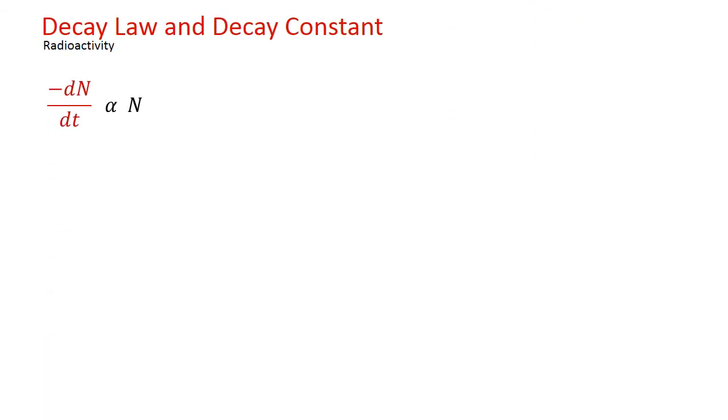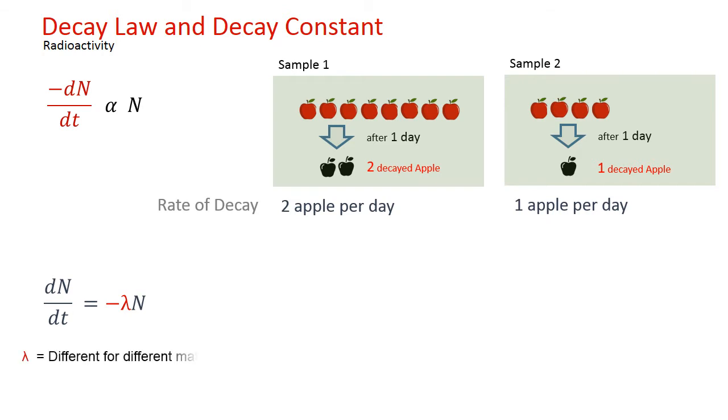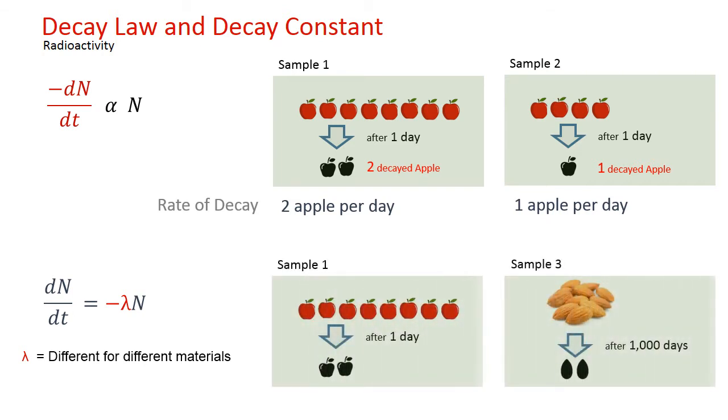In simple words, the rate of decay depends on the amount of substance present. For example, we know intuitively that rate of decay for sample one will be more than rate of decay for sample two. So we write dN/dt is equal to minus lambda N, and lambda is dependent on the type of material.